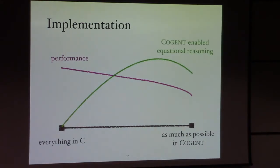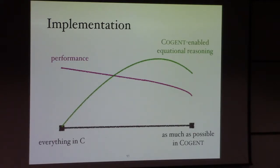Coming to the implementation, we have this spectrum. How much you want to write in Cogent is a hard question, and you don't really know the answer before you attempt it. We roughly have these lines showing the performance and how much equational reasoning you can get from Cogent, but that's a very rough idea — not accurate at all. You have to analyze it case by case.